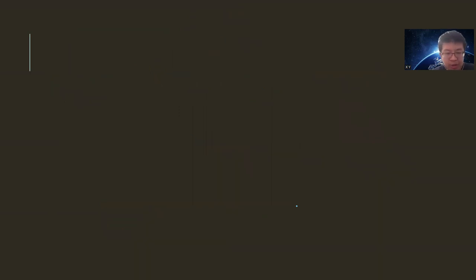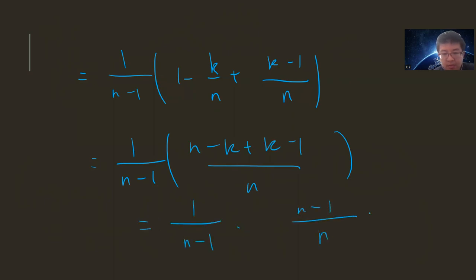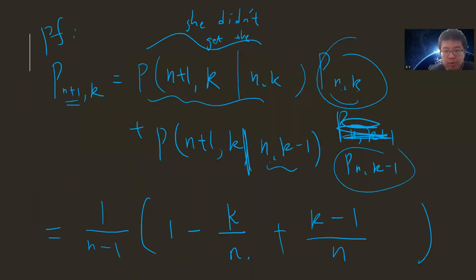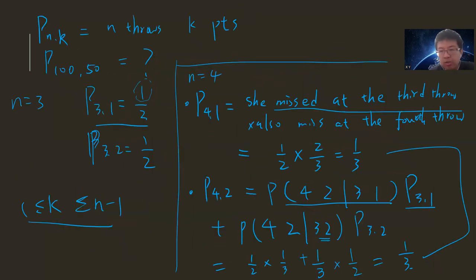So this simplifies to one divided by n minus one, times one divided by n, which equals one divided by n. And so we finish our induction. Going back to the answer: for 100 throws with exactly 50 baskets, the answer is one divided by 99, which is one divided by n minus one. This problem is very tricky — you need to write down the solution and think carefully. Maybe try n equals five to see the hint. I think this one is very difficult. See you guys in the next video.